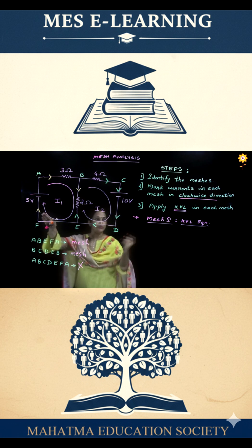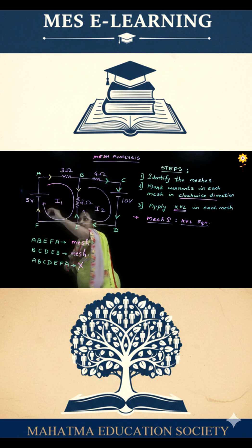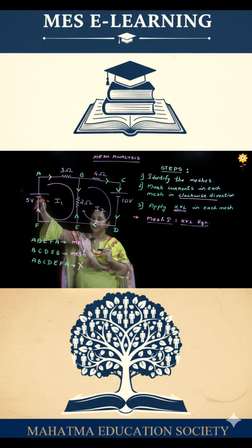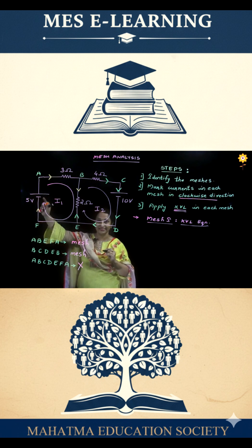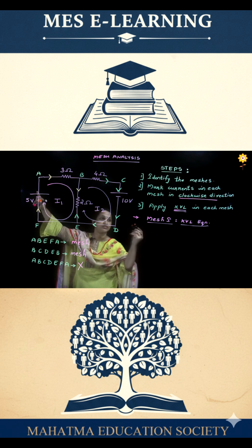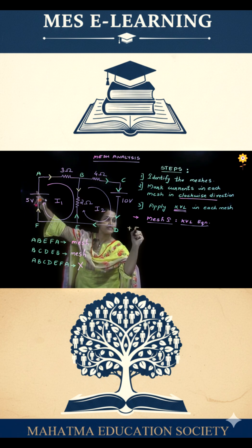How do you write the KVL equation now? Since in this case, the direction in which we are moving through this voltage source is from negative to positive, that means there is a voltage rise. And whenever there is a voltage rise, you can assume the voltage drop to be positive. So here, since we are moving from negative to positive, we can write it as plus 5.